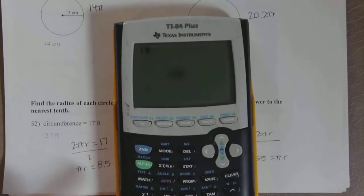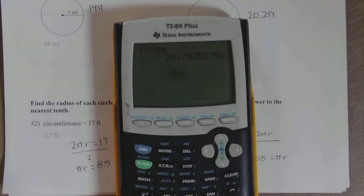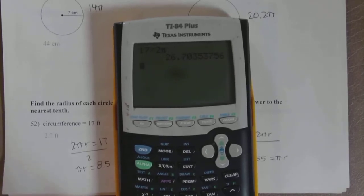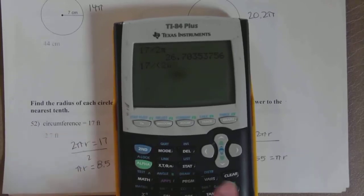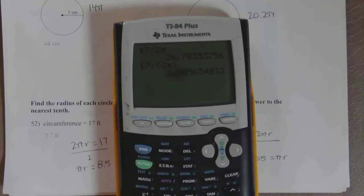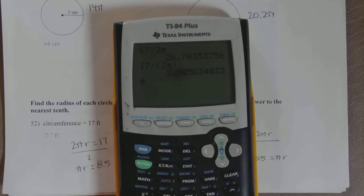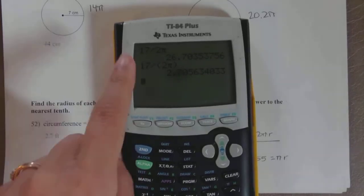If you just plug in 17 divided by 2π, you get 26.7. If you thought about that answer for about 2.3 seconds, you would realize that answer makes no sense. How could the radius be larger than the circumference? It cannot. So you need to do 17 divided by parentheses 2π, and you get 2.7. Yes, that makes sense.